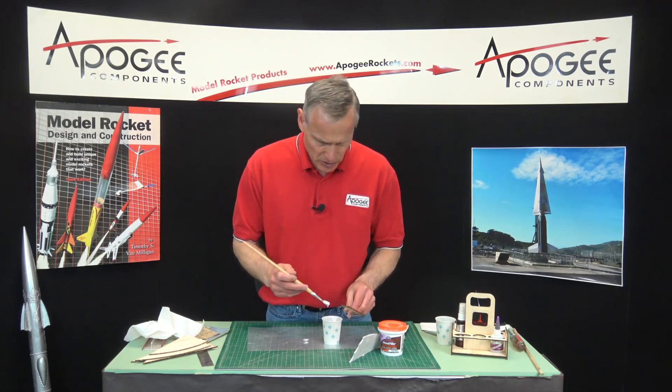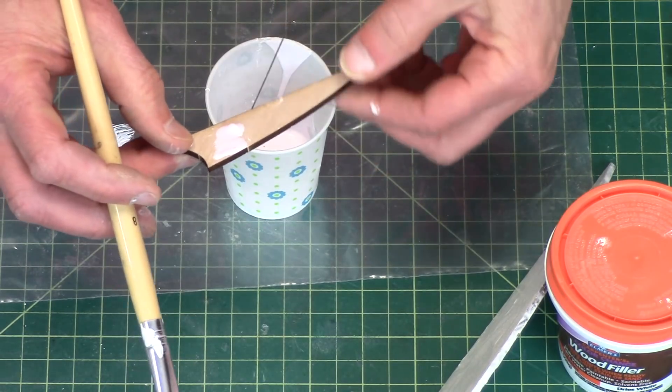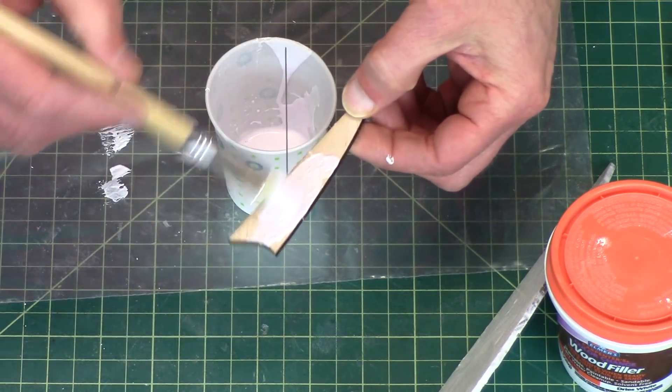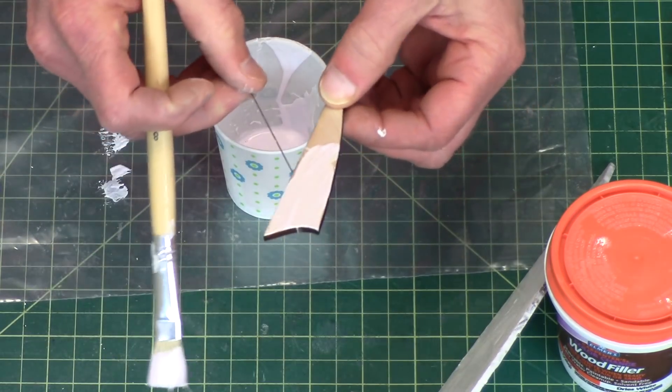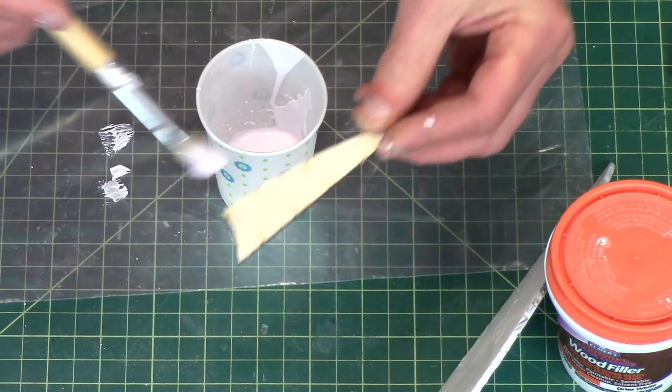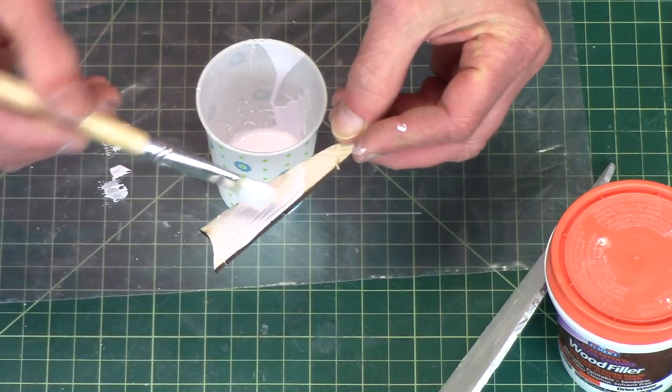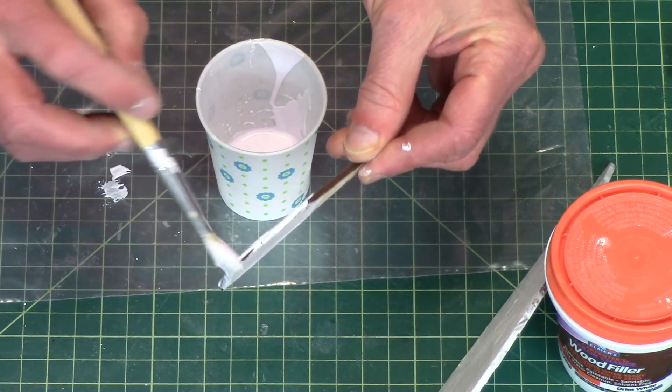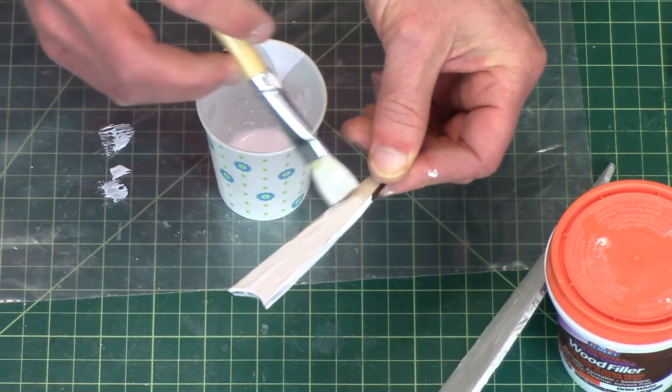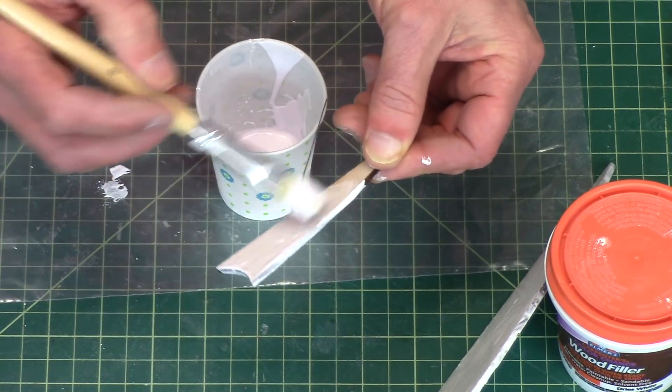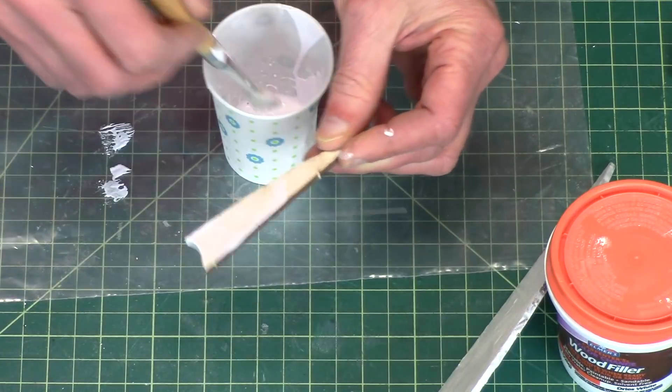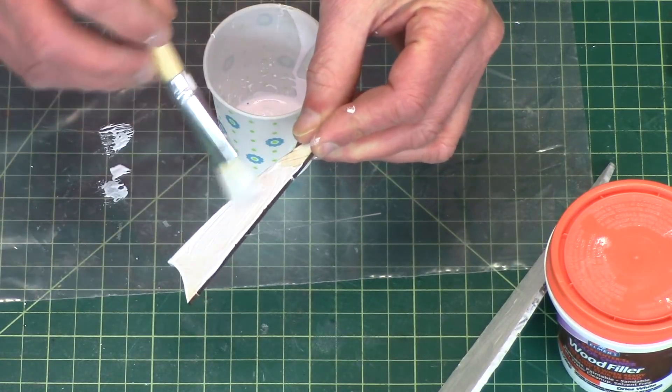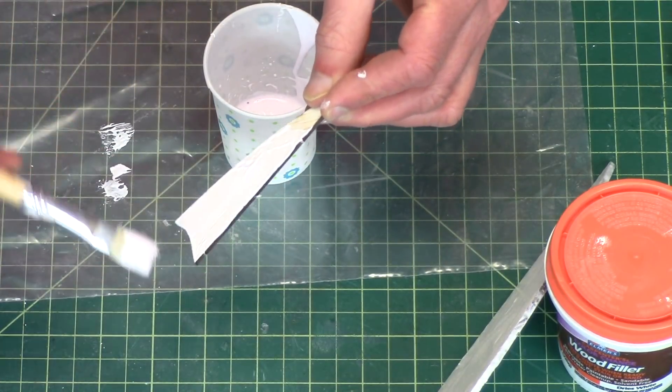As I'm painting on the sealer I'll start with holding it like this, and then eventually when I'm getting to the edge I'll go like that.